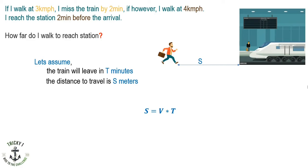Let's consider the first data. If I walk at 3 km per hour, I miss the train by 2 minutes. The distance I travel, S, equals 3 km per hour times T plus 2. Why? Because T is the train leaving time and I am 2 minutes delayed. So the total time I took to reach the station is T plus 2 minutes.